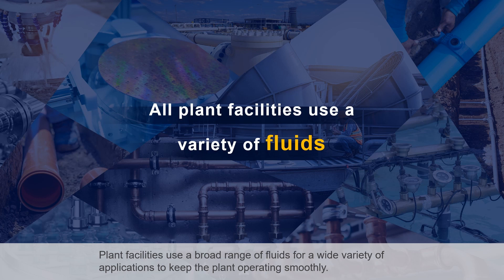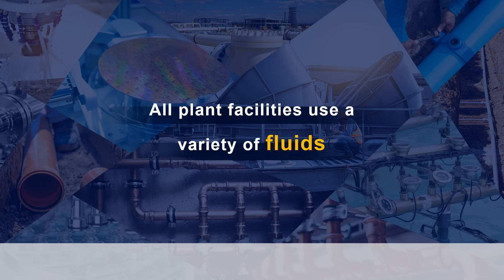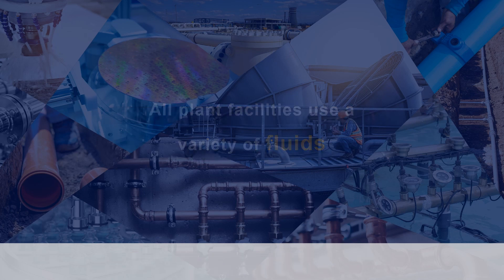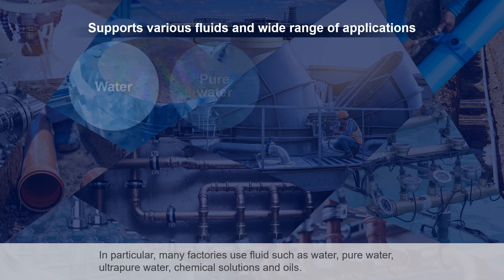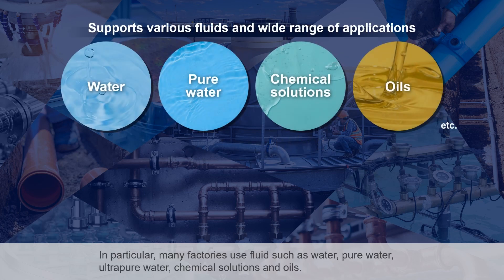Plant facilities use a broad range of fluids for a wide variety of applications to keep the plant operating smoothly. In particular, many factories use fluids such as water, pure water, ultra-pure water, chemical solutions, and oils.